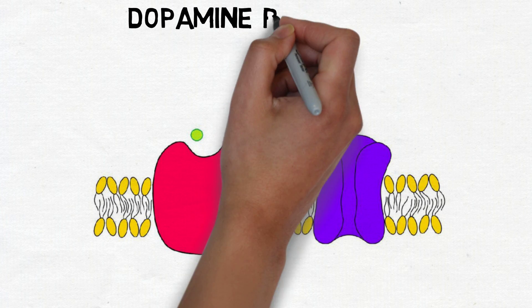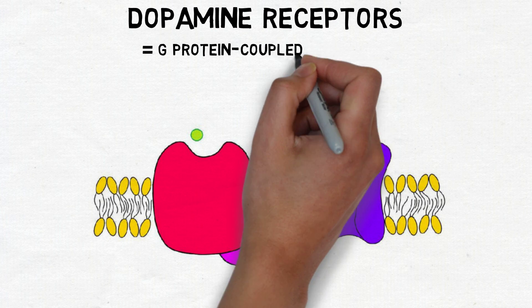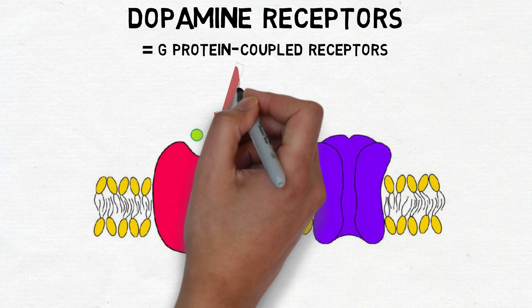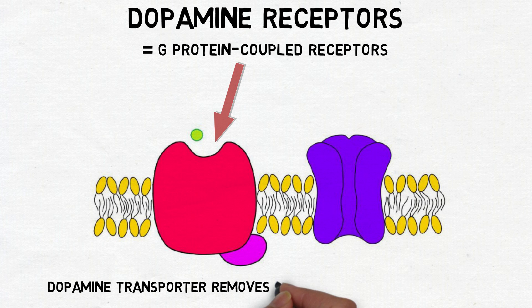Dopamine acts at G-protein coupled receptors, and there are at least five subtypes of the dopamine receptor. Dopamine is removed from the synaptic cleft by a transporter protein called the dopamine transporter.